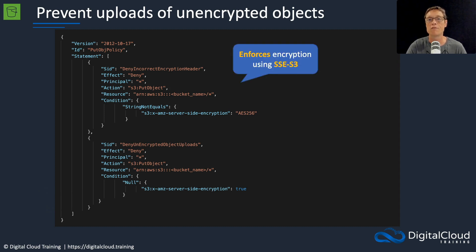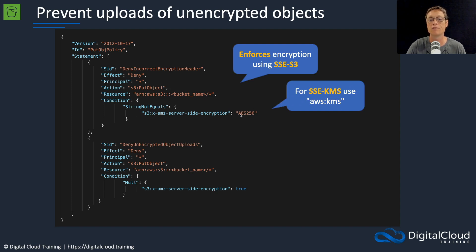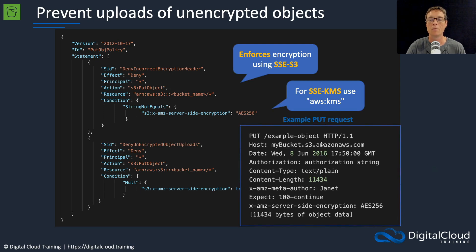This policy will enforce encryption using SSE-S3, and for SSE-KMS you would use aws:kms instead of AES256. If you perform a PUT request, you must have the header x-amz-server-side-encryption set to AES256. If that header is not set correctly — for example if you try to use KMS encryption when the policy specifies AES256 — the PUT request will not be allowed because it doesn't match what's specified in the bucket policy.